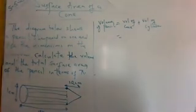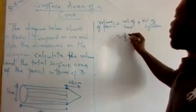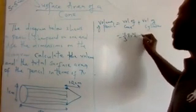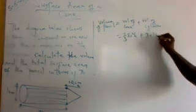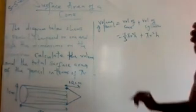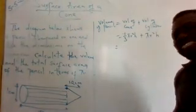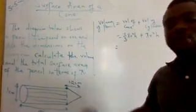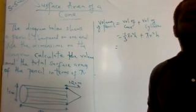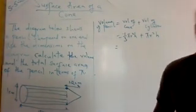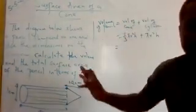The formula for the volume of a cone is one-third π r² h. The volume of a cylinder is π r² h. Remember, they said to give your answer in terms of π, meaning you are not going to substitute 22/7 or 3.14 — you just use π as π.